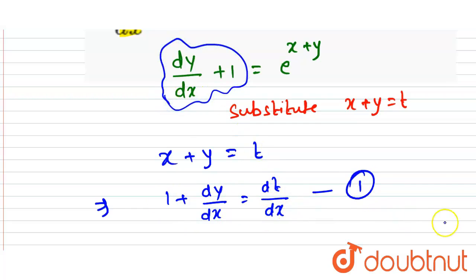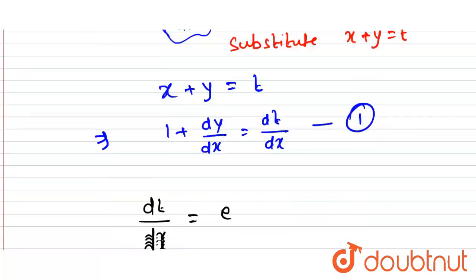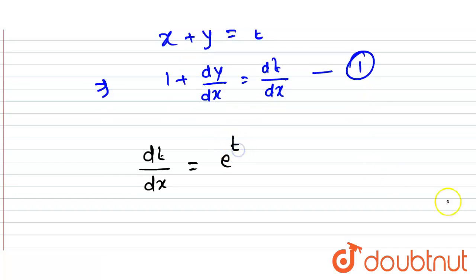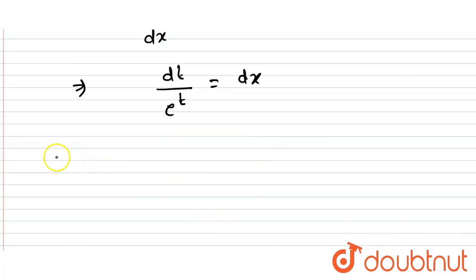Substituting, the equation becomes dt/dx equals e to the power t. Or we can write this as dt upon e to the power t equals dx, which we can rewrite as e to the power minus t dt equals dx.